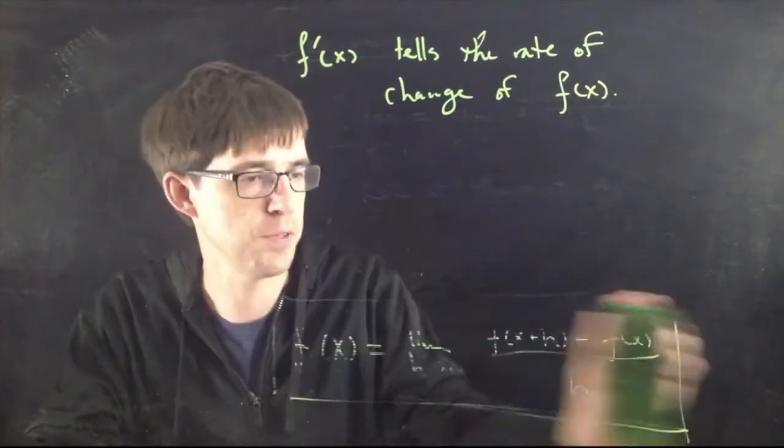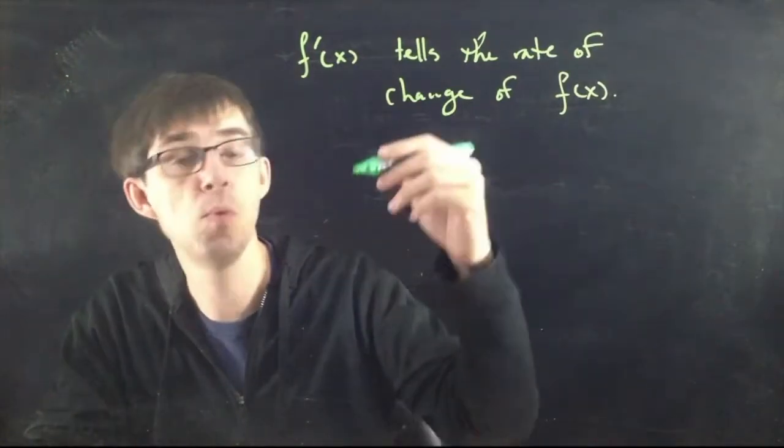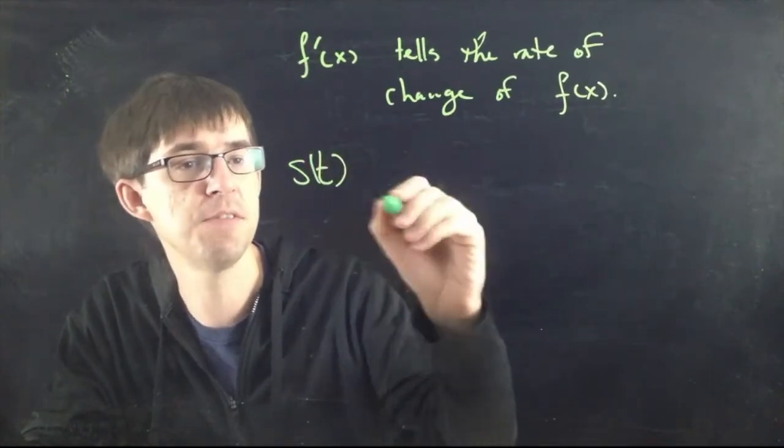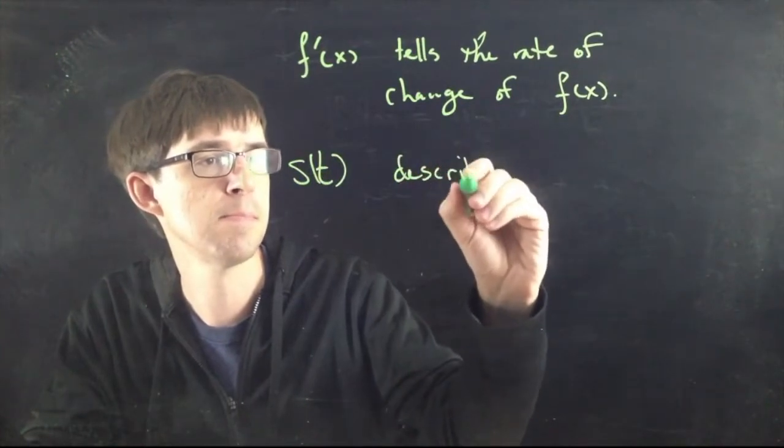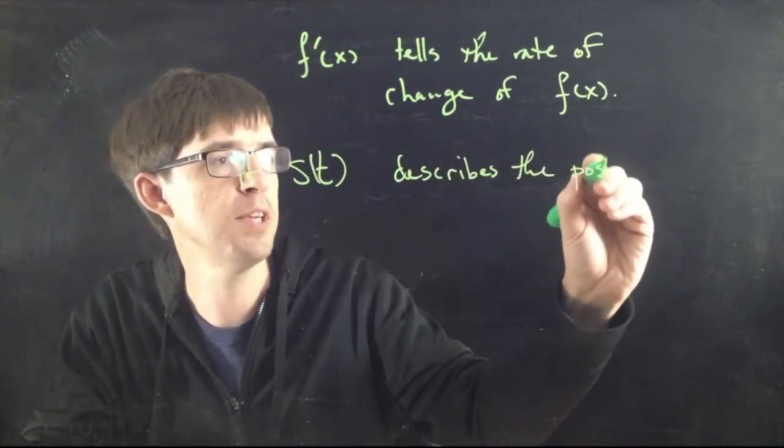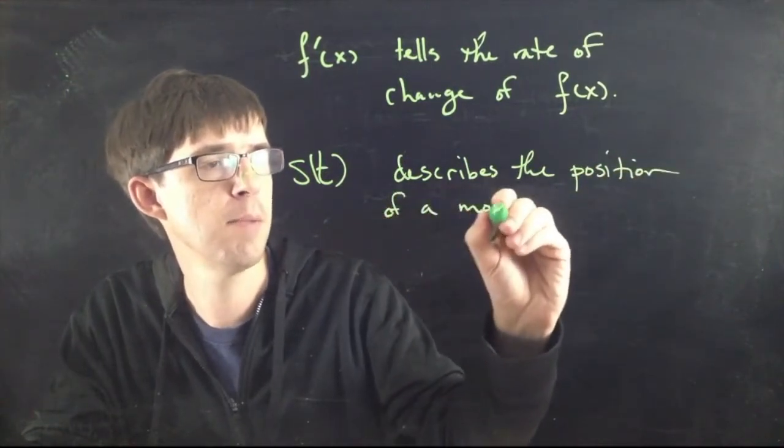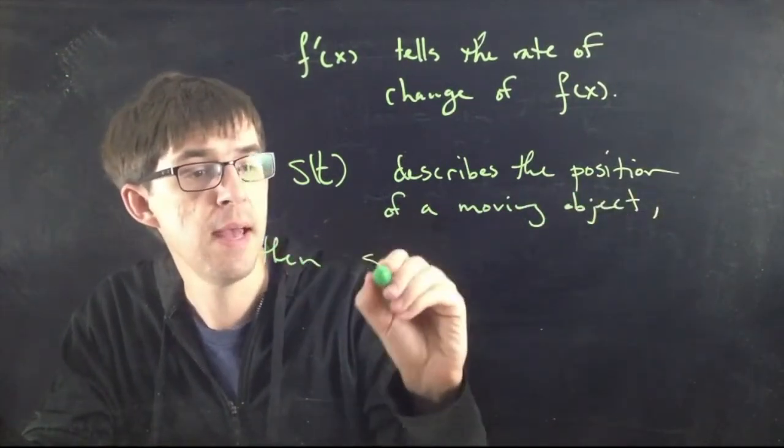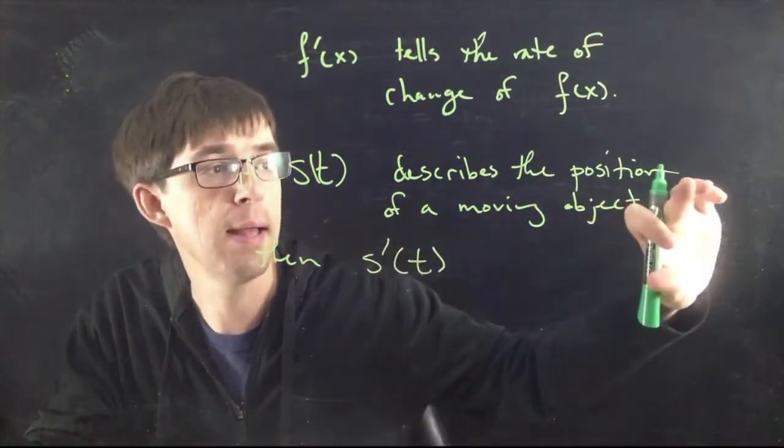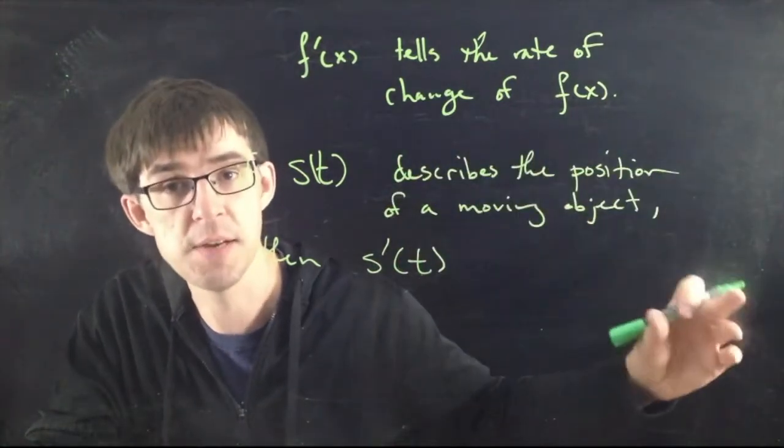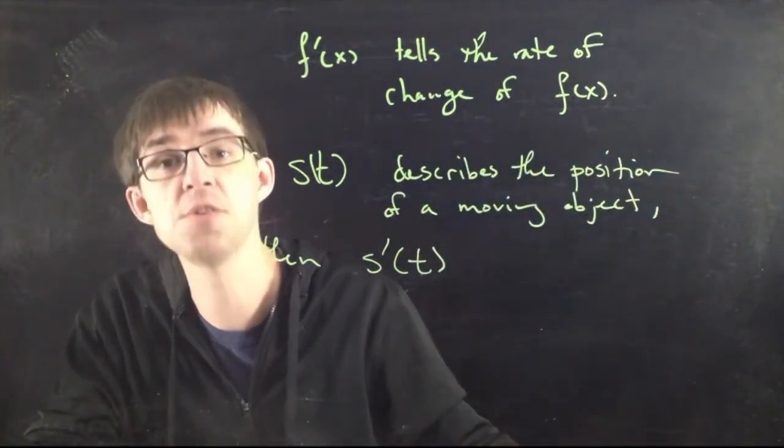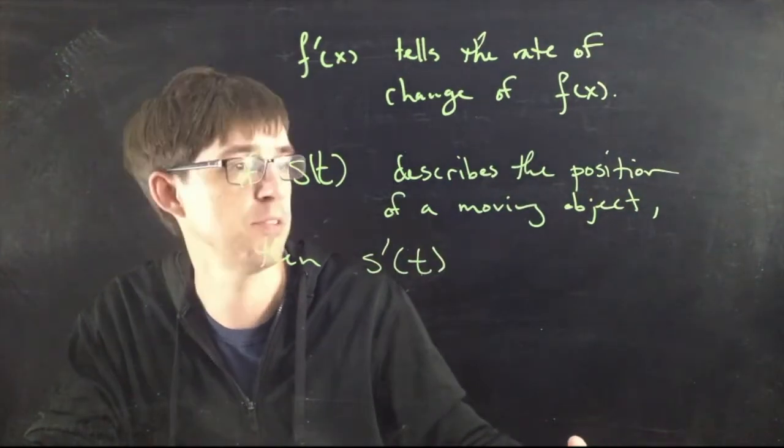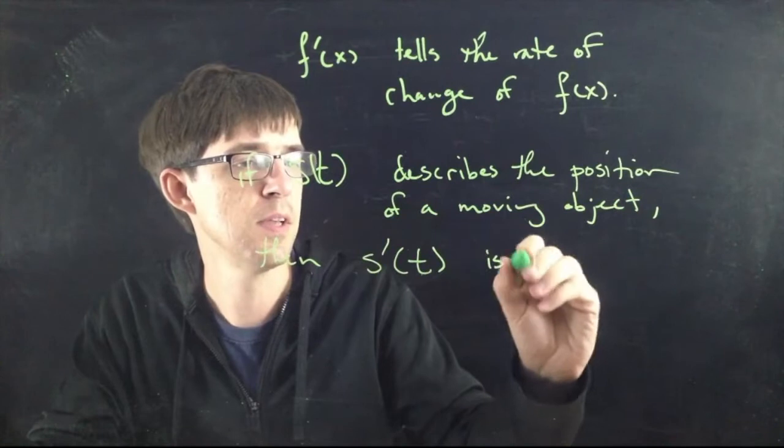The classic example, which is like what I talked about from the very beginning about rates of change. What if I have some function, I'll call it S(t). If S(t) describes the position of a moving object over time, then what does the derivative represent? Then S'(t) would represent - so S represents a function which tells you the positions at every different time - S'(t) is a function which tells you not the position but it tells you how fast the position is changing, which is to say the velocity of the object or the speed of the object.